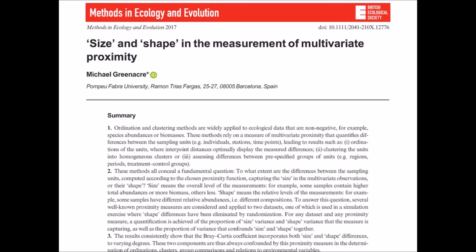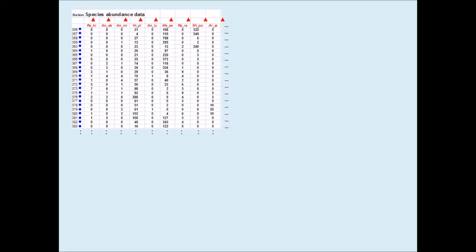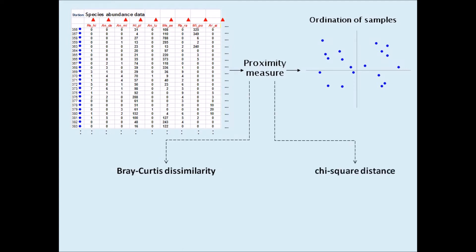My field is multivariate analysis and I've worked for more than 25 years with ecologists, especially in the area of diversity and ordination. Ordination methods depend on the proximity function that is chosen by the researcher to quantify differences between samples. The two most popular choices are the so-called Bray-Curtis dissimilarity and the chi-square distance, with the choice generally depending on which school of thought the researcher comes from, what literature he or she follows, and especially what software is easily available.